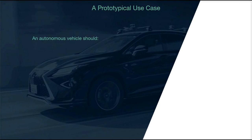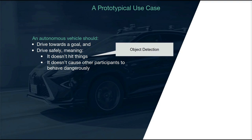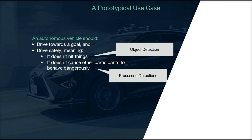Let's first take a look at a prototypical use case for autonomous driving. In general, an autonomous vehicle should drive towards some goal and while doing so, it should drive safely. This means that it shouldn't hit things and it shouldn't behave in a way that's dangerous for other traffic participants. That means it shouldn't stray from lane boundaries and it shouldn't aggressively cut off other traffic participants. How does this relate to object detection? The first use case of not hitting things is very much in the purview of object detection — you need to know where things are in order to not hit them.